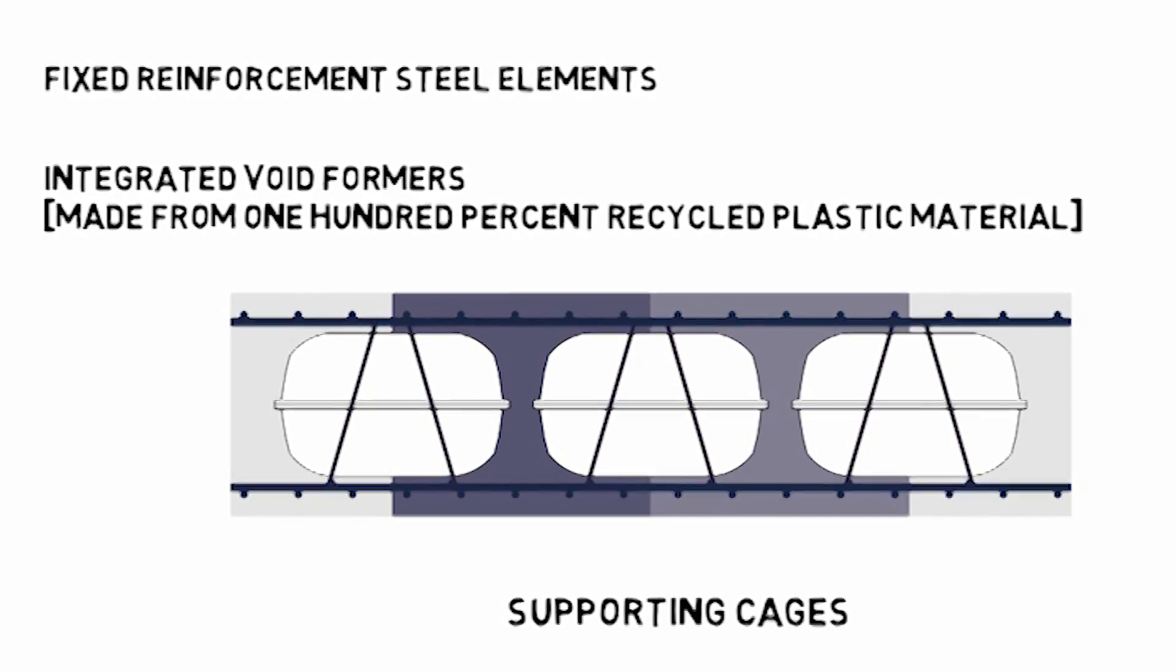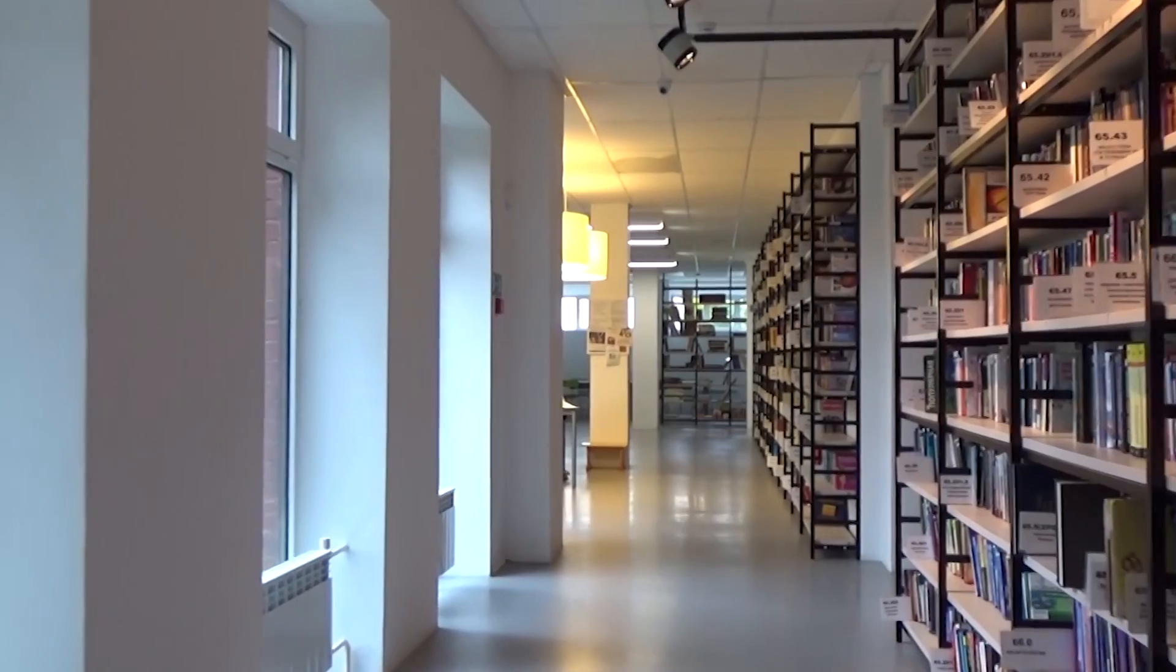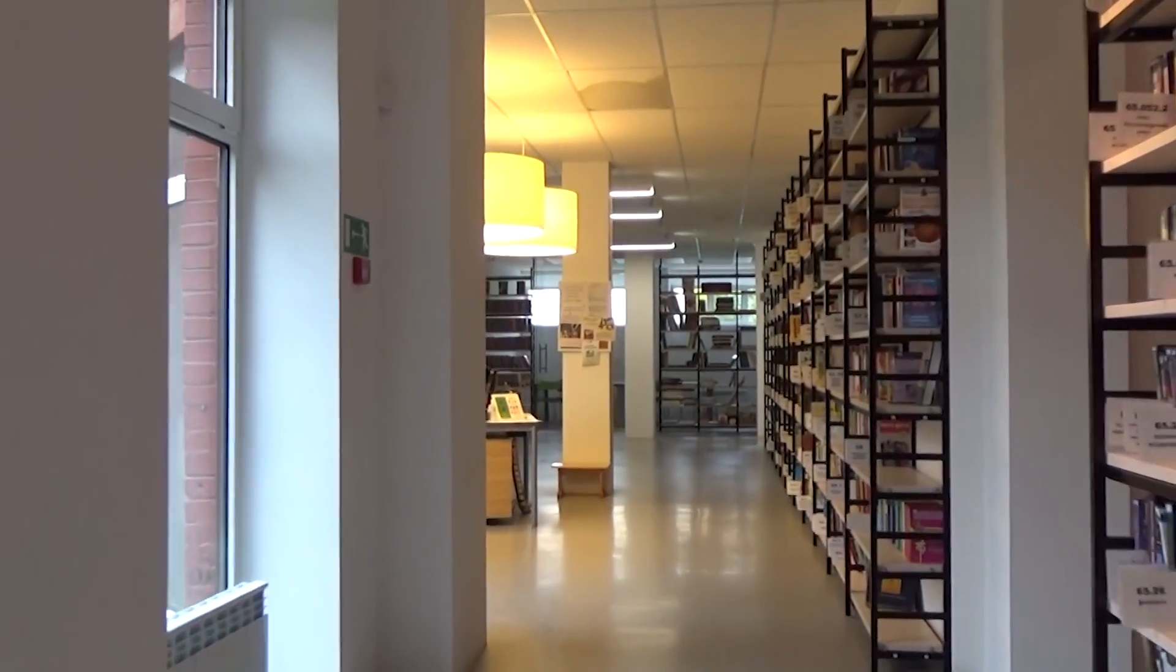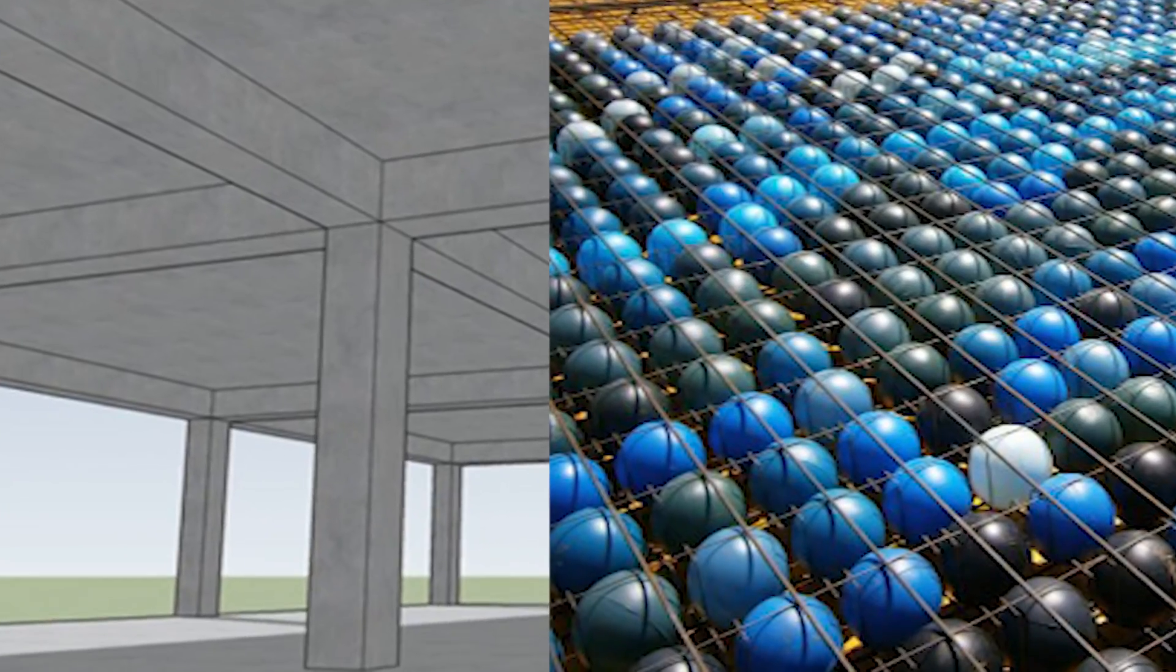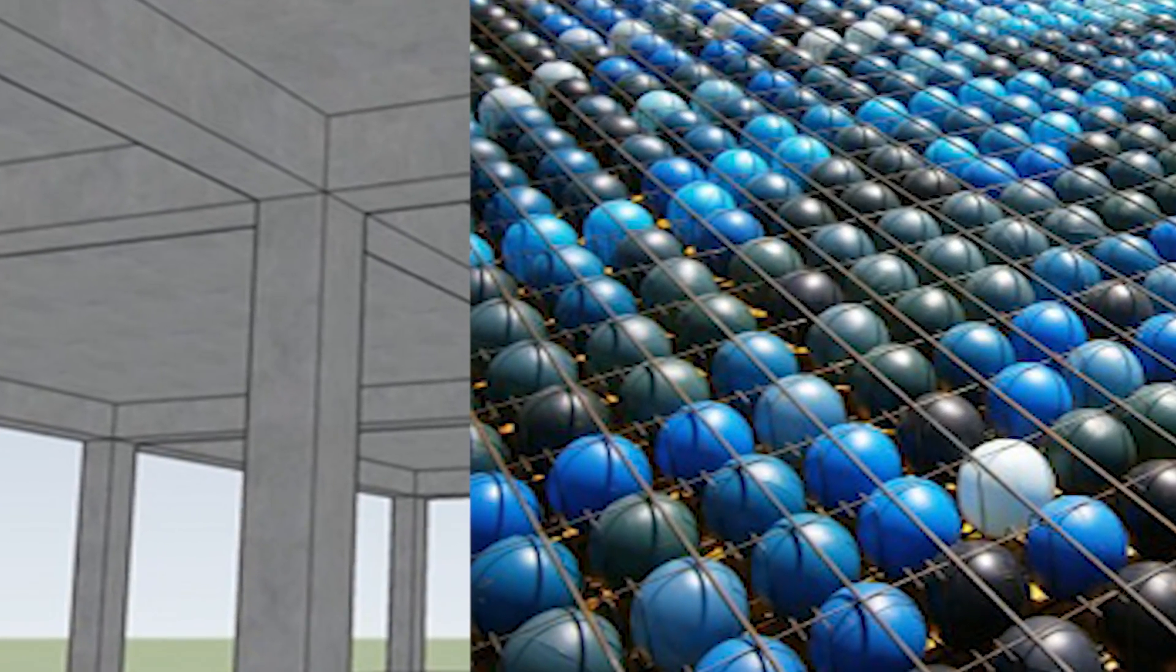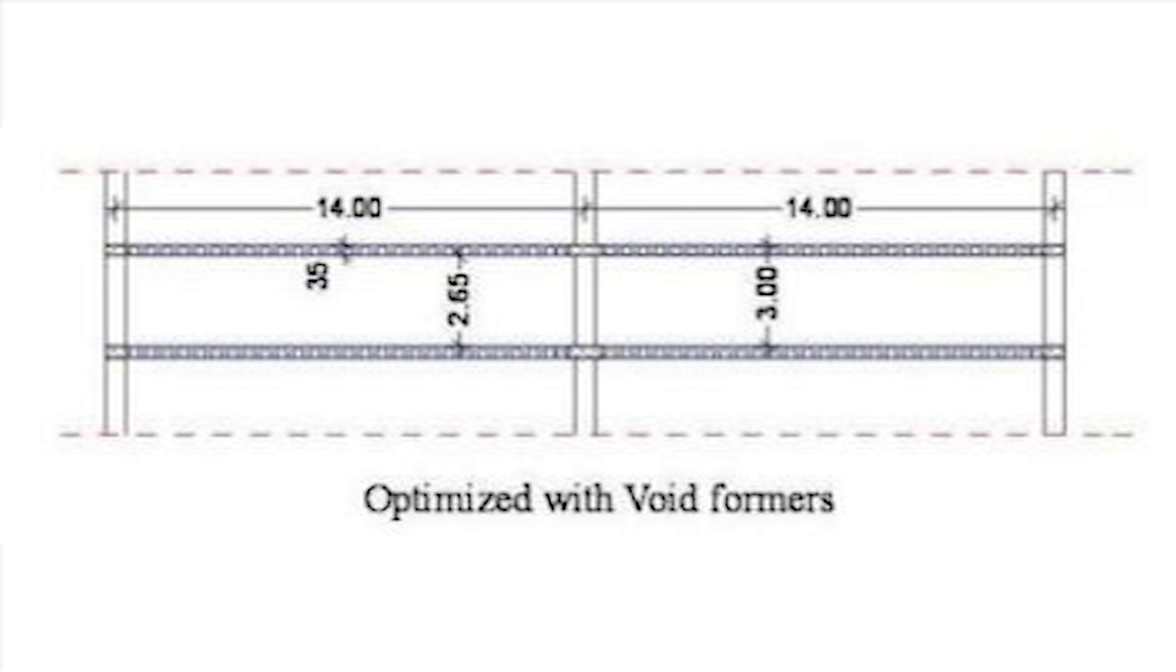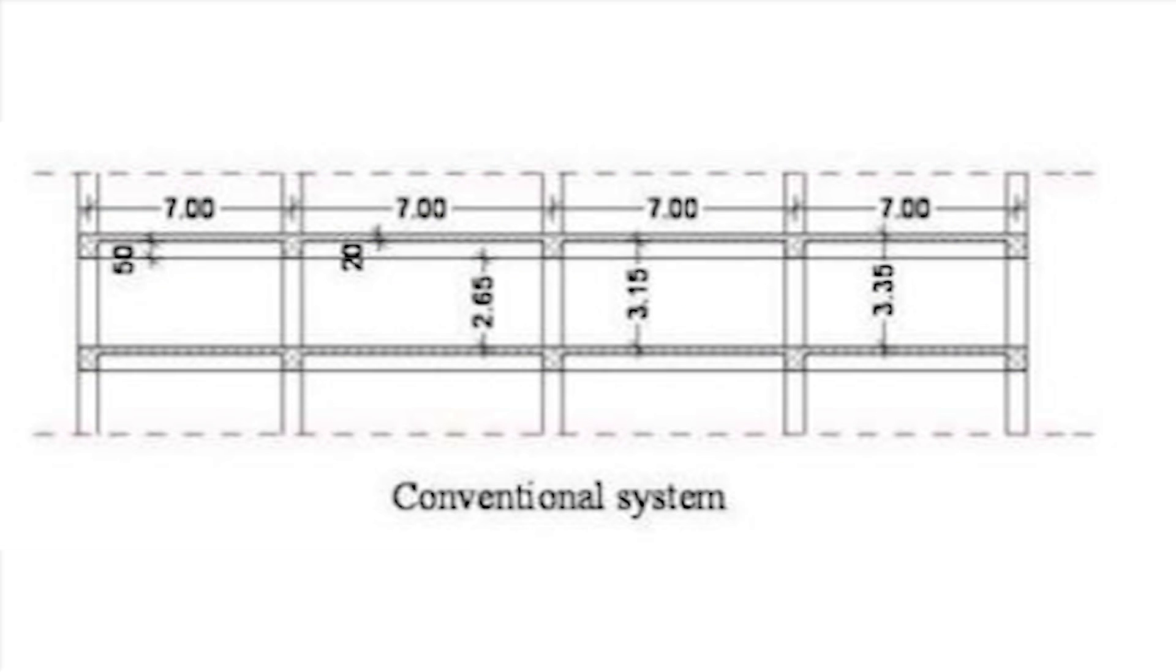According to a case study done by the UBT University of Business and Technology, they compared both types of slab: conventional slab and optimized with Cobiax. They found many things. Let me show you this. Here in this figure you can see the difference in the heights of the building in the conventional slab and the void former slab. It facilitates architects with great opportunity in floor flexibility and the execution of the building is easier.